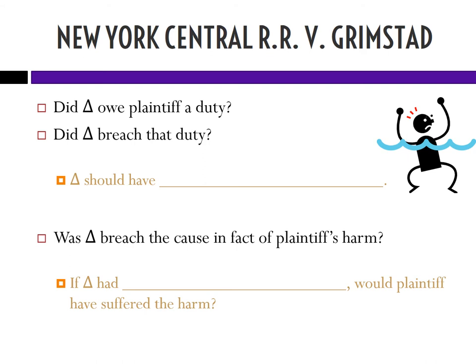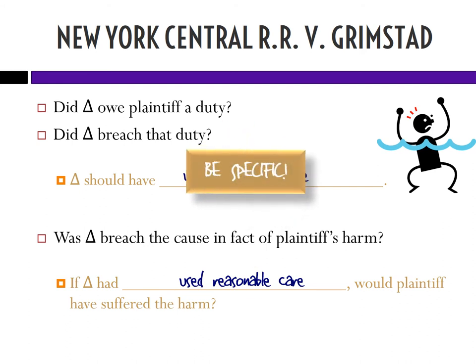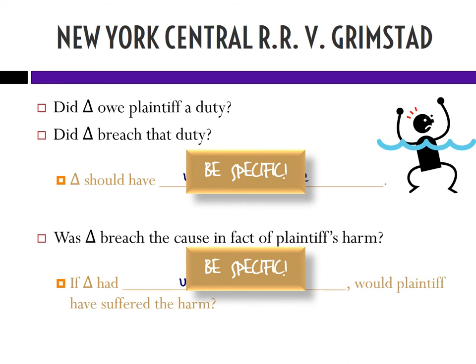One thing students sometimes do is say the defendant should have used reasonable care, and if they had used reasonable care, plaintiff wouldn't have suffered the harm. The problem is it's not specific enough. You need to be specific about what that reasonable care is. Come up with a specific thing that the plaintiff is going to claim the defendant should have done differently in the breach analysis, and then when you get to the cause in fact analysis, you can do real analysis on whether that untaken precaution would have actually made a difference.